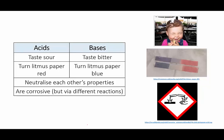Acids and bases also, if they're mixed, neutralise each other's properties, and they can corrode materials, although the chemical reactions that occur during the corrosion are different for acids and bases.